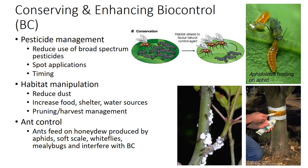This selectivity derives from the active ingredient, formulation, method of application, and time of application. Production practices can also be manipulated to benefit natural enemies. A lack of plant diversity, for instance, can increase a crop's susceptibility to pest attack and reduce its attractiveness to natural enemies.